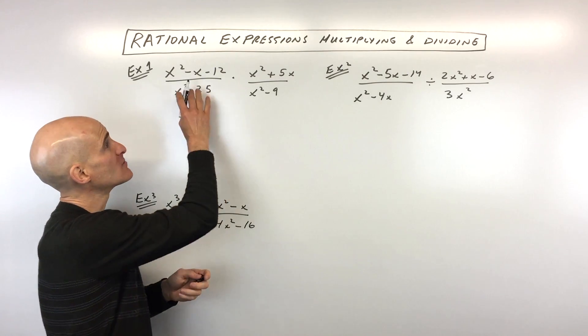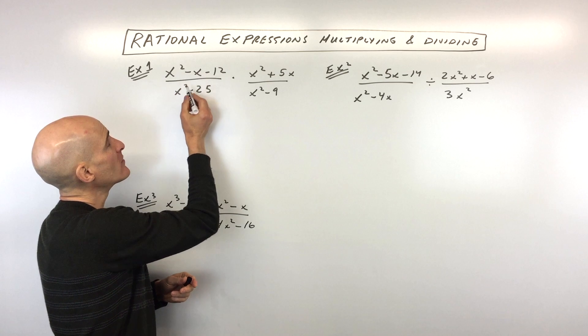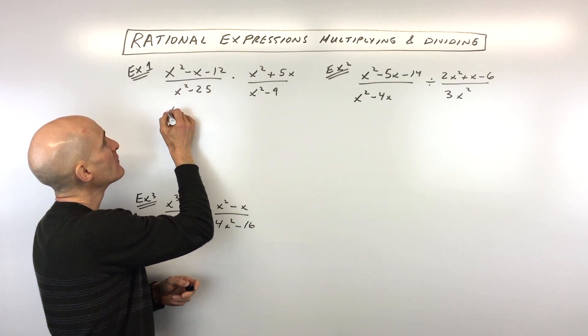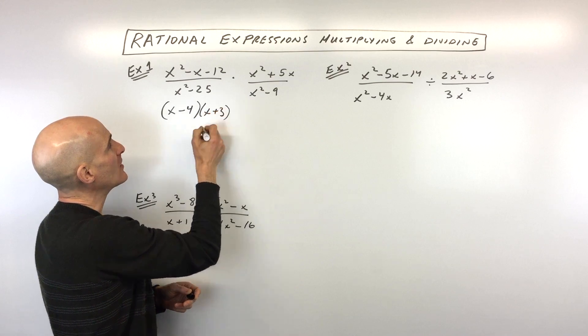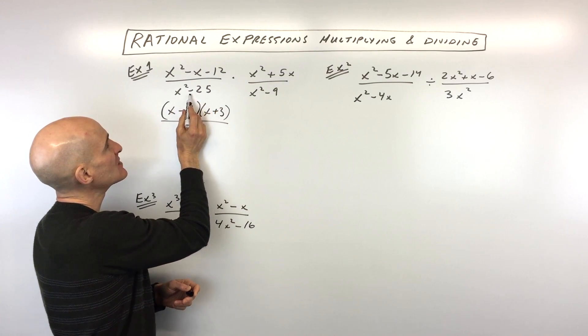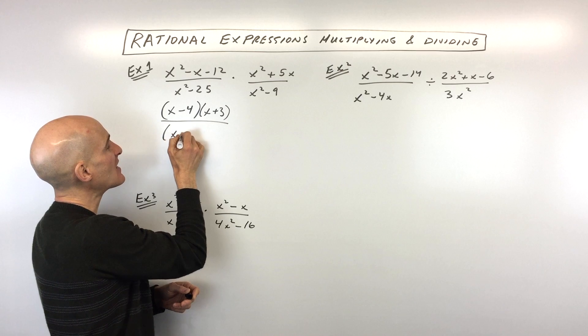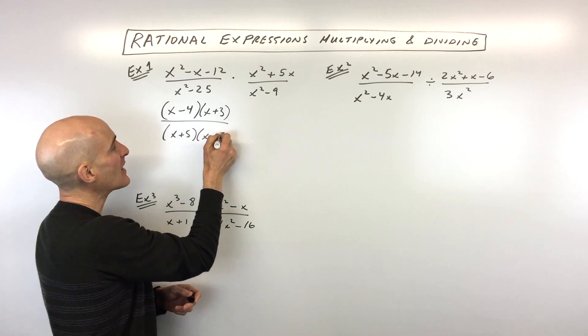First step is to factor as much as you can. So the first one, you can see this first numerator, we can factor this to x minus 4 times x plus 3. Whereas the denominator, this is a difference of two squares, we can factor this as x plus 5 times x minus 5.